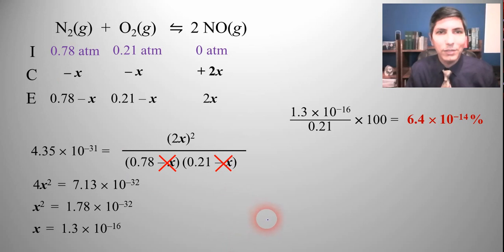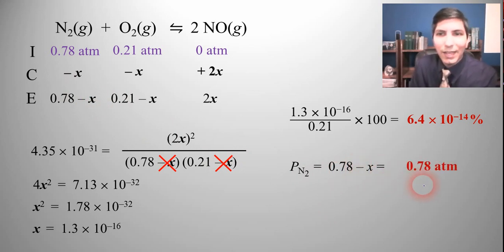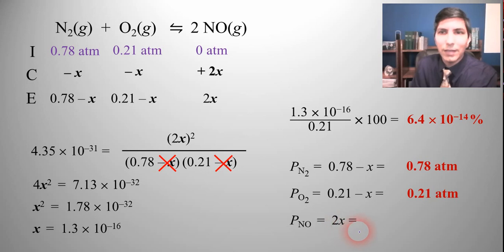Now we can find out our values here. So N2 is 0.78 minus x which is basically 0.78 atmospheres. And then oxygen is 0.21 minus x so that's 0.21 atmospheres. And the nitrogen monoxide is the 2x so that's 2.6 times 10 to the negative 16th atmosphere. So it's safe to say that the amount of NO that's there is very very small and that's good because NO is not a gas that you want to breathe in a whole lot of.